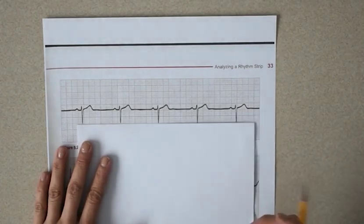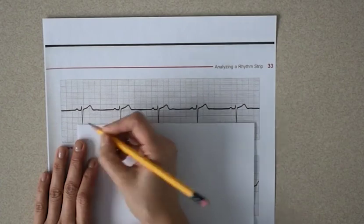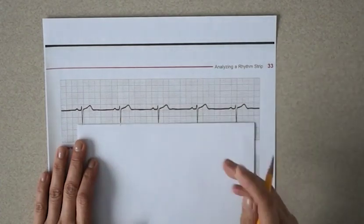So first you'll start by marking the first RR interval. Make sure your pencil's sharp. Okay, mark the first two.